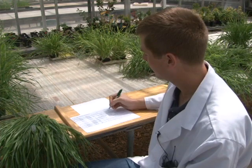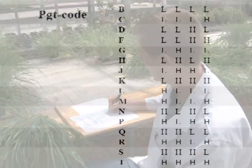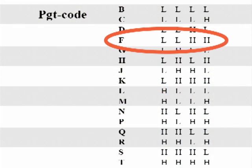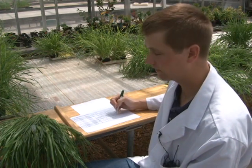For the second set, the pattern is low, low, high, high. That infection type pattern corresponds to the letter F. When you go through all five sets of the differentials, you can write down the letter code. In this case, the letter code is QFCSC.